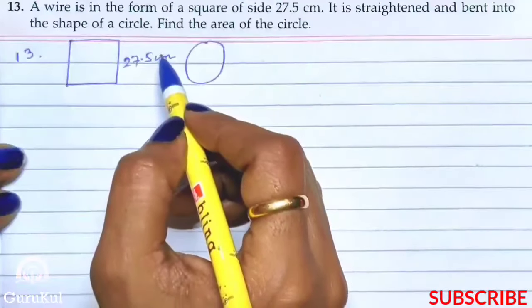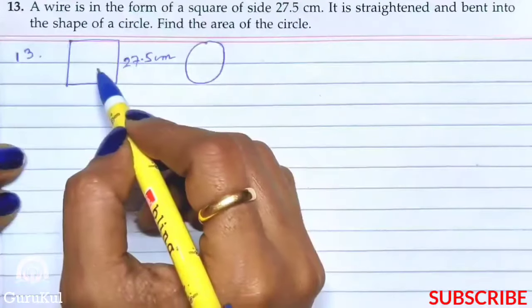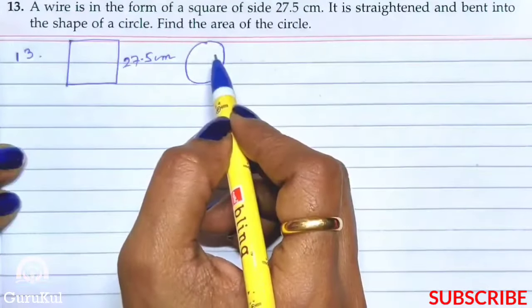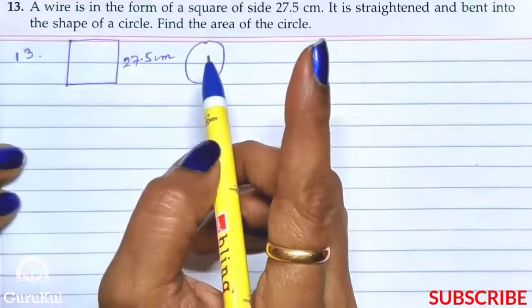That the length of the wire is equal to the perimeter of the square as well as the circumference of the circle.